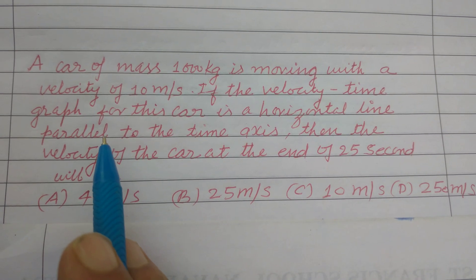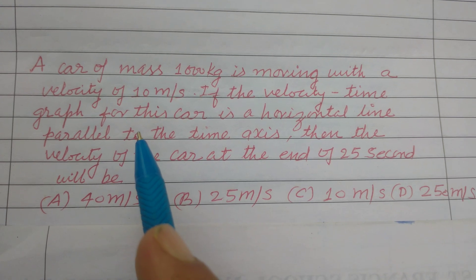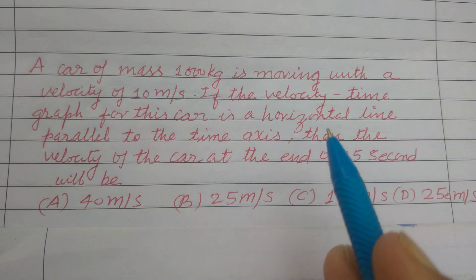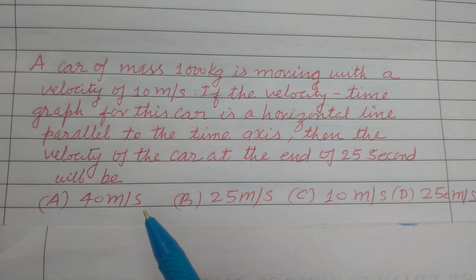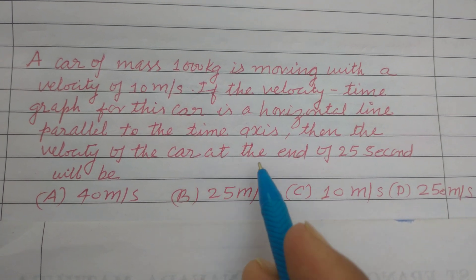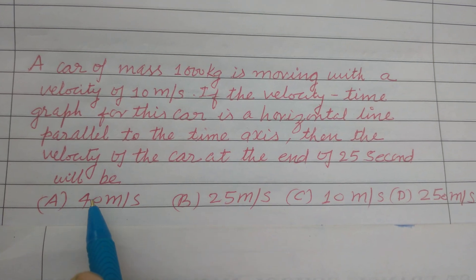If the velocity time graph for this car is a horizontal line parallel to the time axis, then the velocity of the car at the end of 25 seconds will be.